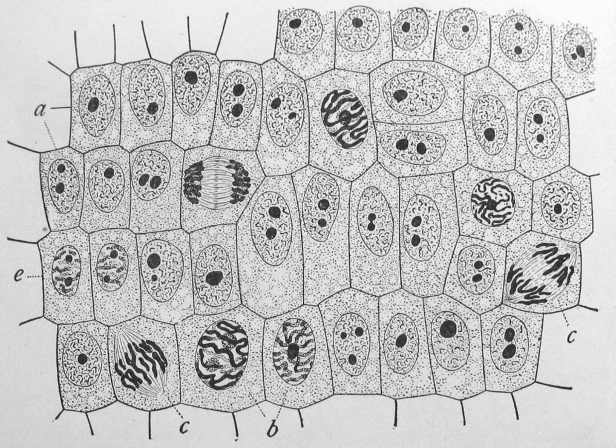A gelatinous capsule is present in some bacteria outside the cell membrane and cell wall. The capsule may be polysaccharide as in pneumococci or meningococci, polypeptide as in Bacillus anthracis, or hyaluronic acid as in streptococci. Capsules are not marked by normal staining protocols and can be detected by India ink or methyl blue, which allows for higher contrast between the cells for observation.